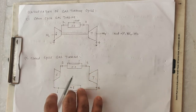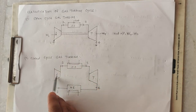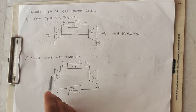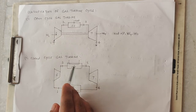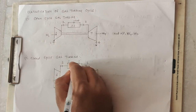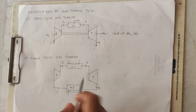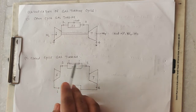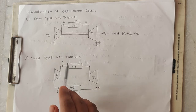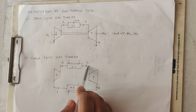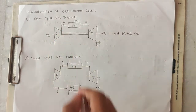In the closed cycle, we use a working medium — let's say air — which is repeatedly used. The air goes to the combustion chamber. Here we use a heat exchanger where the temperature is increased. Then the working medium goes to the turbine and expands there, and work is produced.